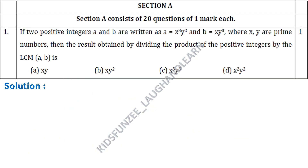Let's start with Section A. In this video we are going to cover questions 1 to 10. They are all multiple choice questions carrying 1 mark each. Question 1: If two positive integers A and B are written as A = x³y² and B = xy³, where x and y are prime numbers, then the result obtained by dividing the product of the positive integers by the LCM of A and B is?